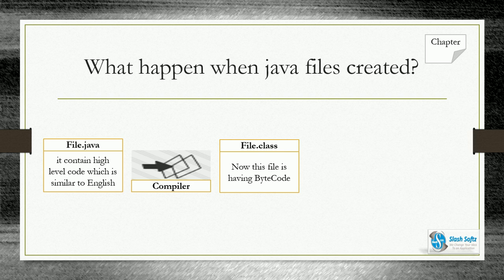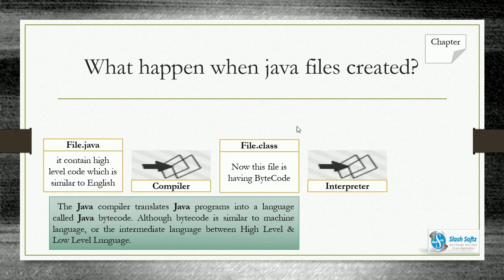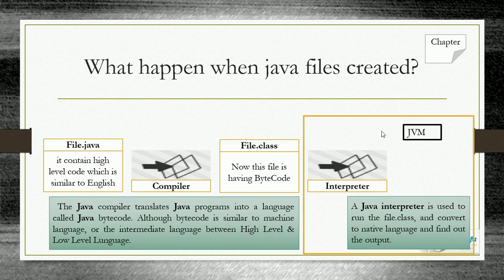This file contains bytecode. The Java compiler translates a Java program into bytecode, which is an intermediate language between high-level and low-level language. The .class file is similar to machine language. The Java interpreter runs the .class file, converting it to native language to produce the output.